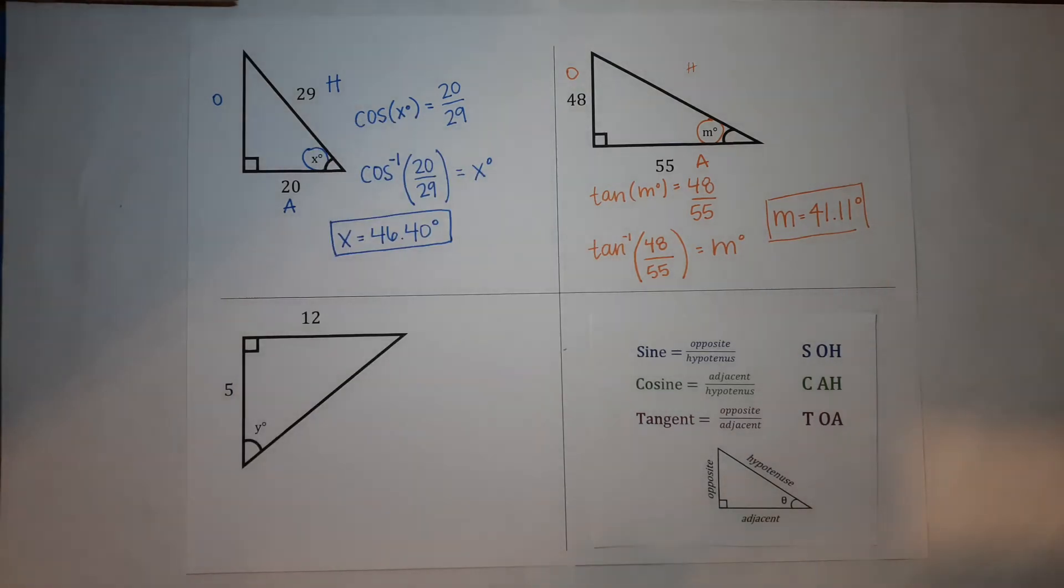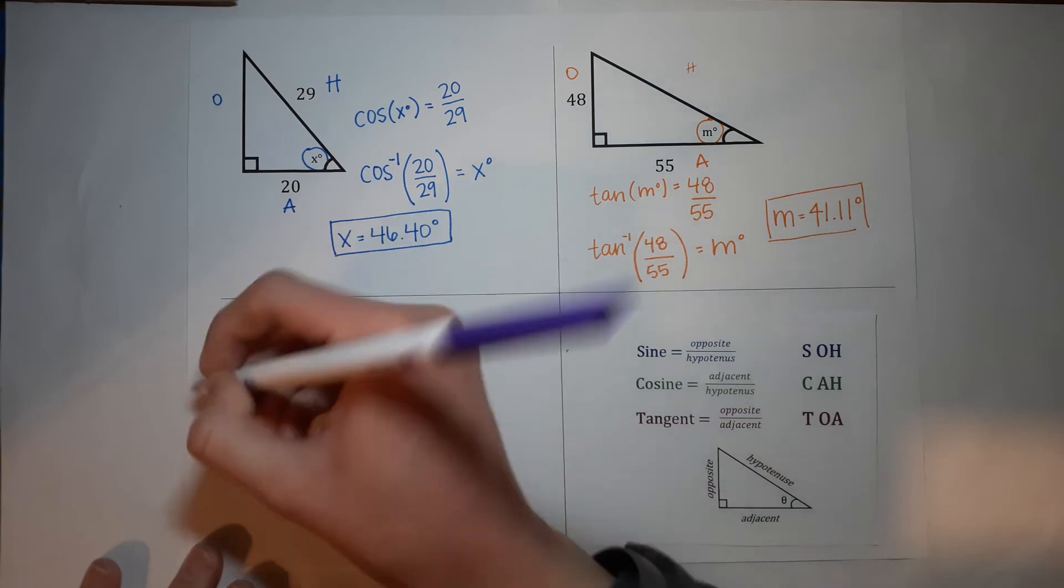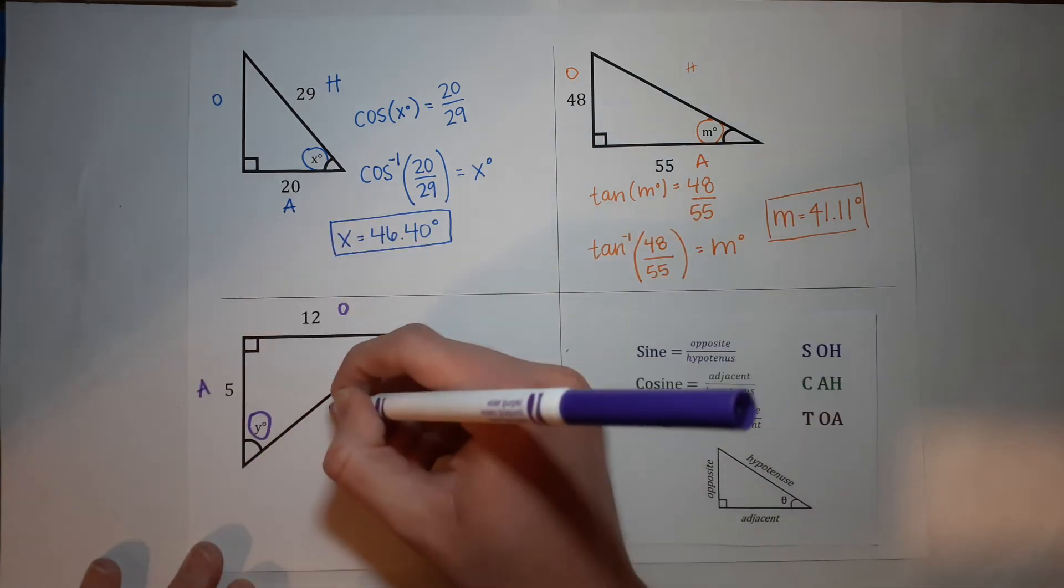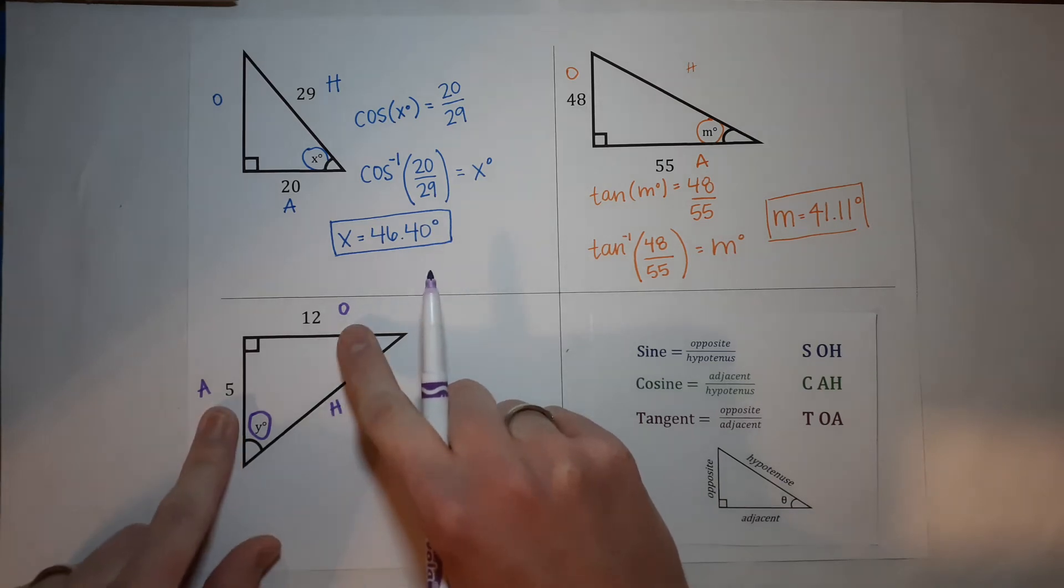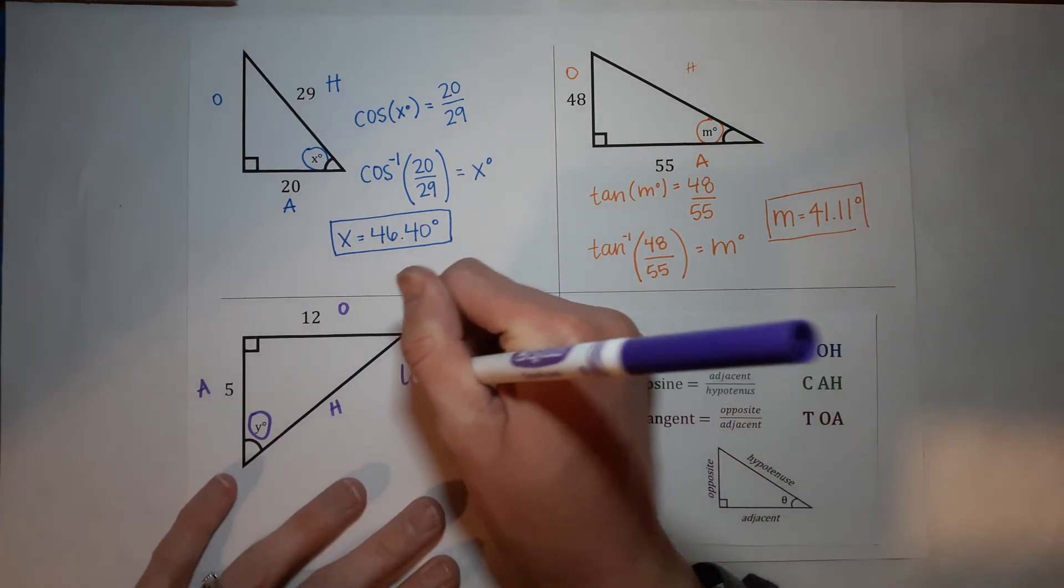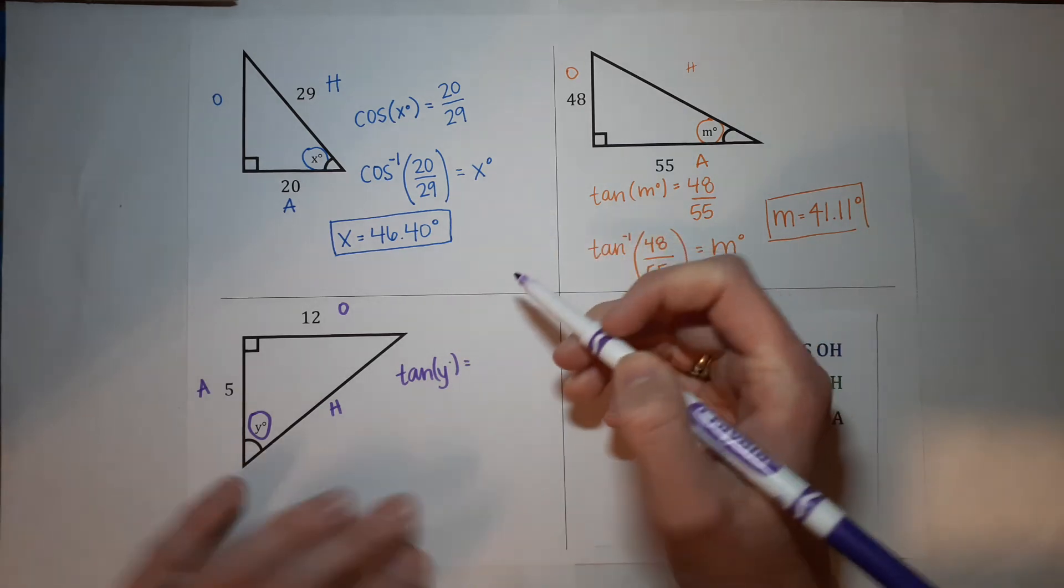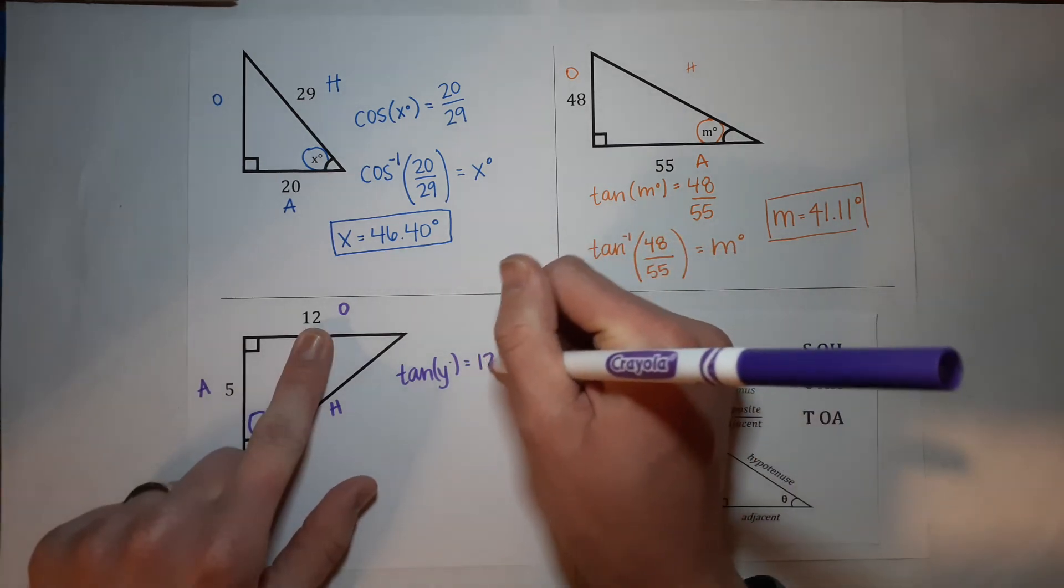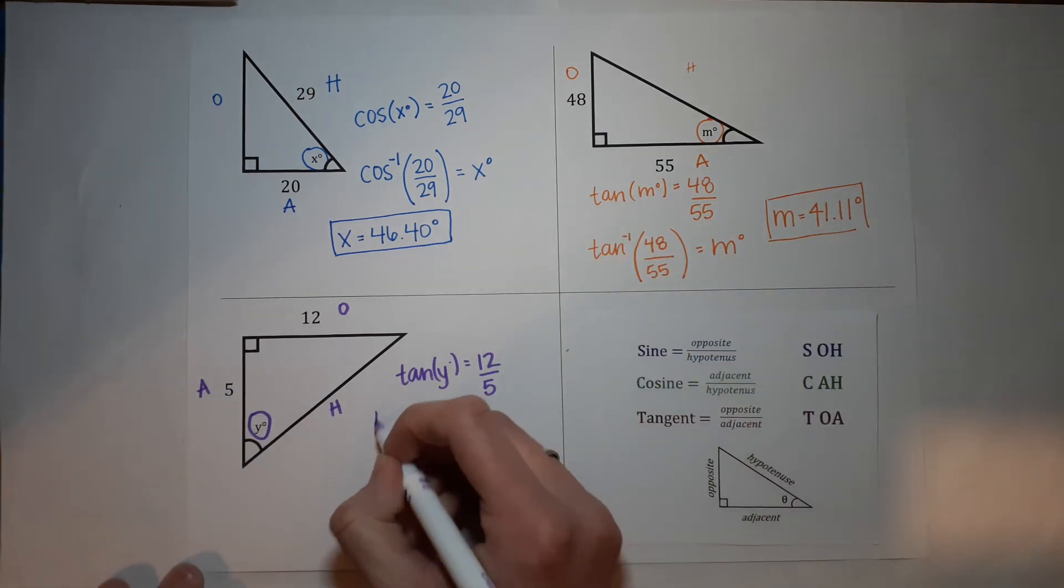Let's do our last one. This one, the one we are looking for is Y degrees. So this is my opposite, this is my adjacent, and my hypotenuse. The values that we have are opposite and adjacent, so that is tangent again. So the tangent of Y degrees is equal to opposite, so 12 over adjacent, which is 5. Now we're going to do the inverse.